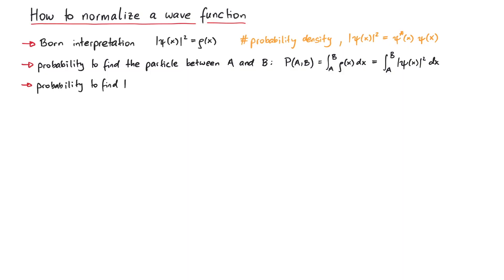What about the probability to find the particle anywhere? That is, what if we integrate from minus infinity to plus infinity? The particle has to be somewhere, so if we're looking everywhere, we will 100% find it. In other words, this integral must be equal to 1. And that's exactly the normalization condition. The particle must be somewhere, so if we look everywhere, we find it with a probability of 100%.